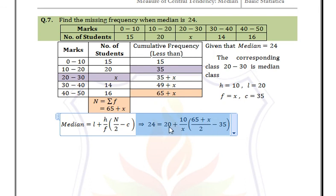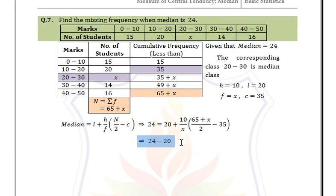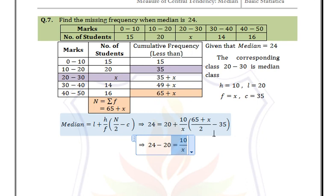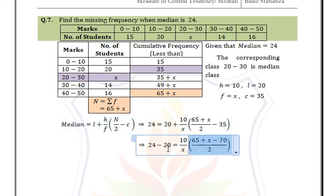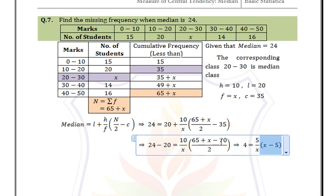Shift 20 to the left: 24 − 20 = (10/X) × ((65 + X − 70)/2). This simplifies to 4 = (10/X) × ((X − 5)/2), and further to 4 = (5/X) × (X − 5).